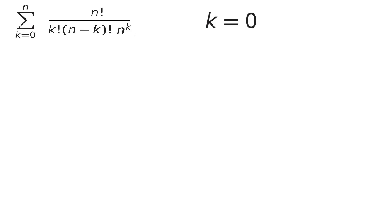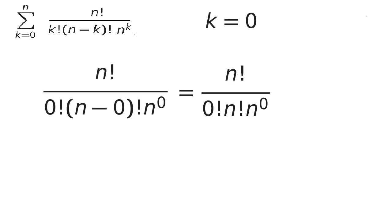Start with the k equals 0 term. It looks like this. Simplify, cancel the n factorials, this is just 1 so out it goes, and here's our first term.